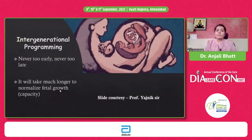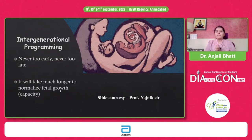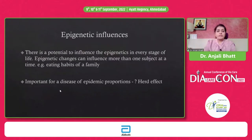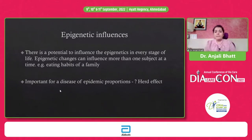There is intergenerational programming — it is never too late or never too early to start changing epigenomic expressions. It will take much longer to normalize fetal growth or capacity, but if we start early and keep continuing the improvement, there are strong and sustained improvements in health and disease parameters. Epigenetic influences have the potential to influence a large number of people together — in a family as a herd or as a society — and they can influence more than one subject at a time. Eating habits of a family are likely to have an effect on a larger number of people rather than just treating one person.